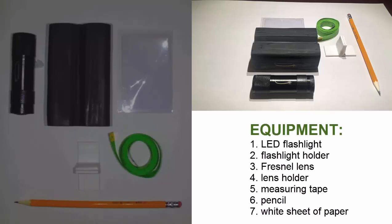The equipment to be used in this lab consists of a flashlight to be used as a light source, a flashlight holder, a Fresnel lens, and a lens holder to hold the Fresnel lens. For measurement we are going to use a measuring tape and for recording data we are going to use a pencil and a white sheet of paper.